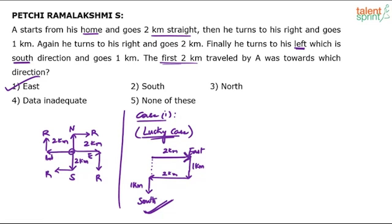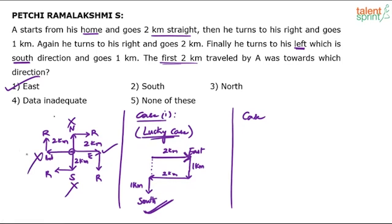Now what happens in the unlucky case? Case 2. Unlucky cases can be 3 — remember the lucky case is only 1 and the unlucky ones are 3. Because out of 4 possibilities only one can be correct; if east is correct, then north, south, and west are all wrong. Let me explain Case 2 — I will explain one of them and a similar approach applies to the remaining.